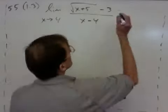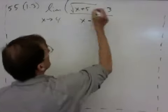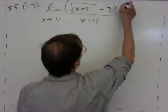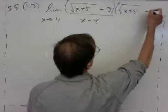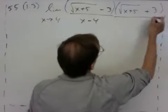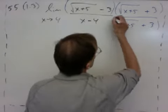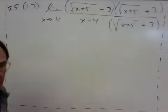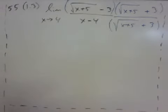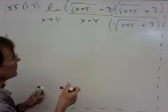So let's start by multiplying by the conjugate of the numerator. So it's going to be radical x plus 5 plus 3 over radical x plus 5 plus 3. So we're multiplying by 1.